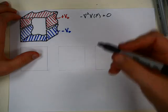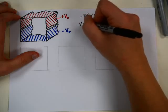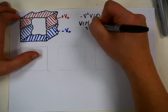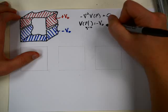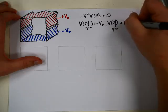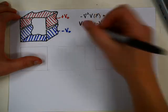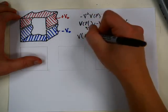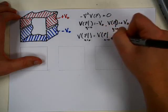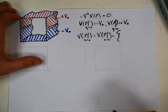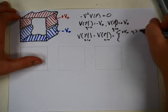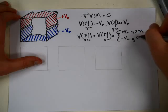We have the following boundary conditions. On the top and the bottom, V of R at Y equals zero should be equal to minus V0, and V of R at Y equals A should be plus V0. On the sides, V at X equals zero is going to be the same as V at X equals A, and this is piecewise continuous: either plus V0 if Y is greater than A over 2, or minus V0 if Y is less than A over 2.